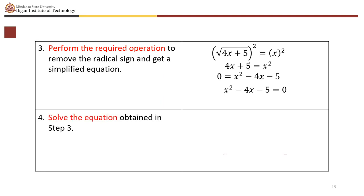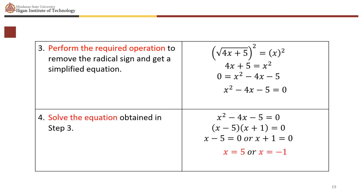Solve by factoring x squared minus 4x minus 5 equals 0. This factors as (x minus 5)(x plus 1) equals 0, giving x equals 5 or x equals negative 1. Now verify both values in the original equation.